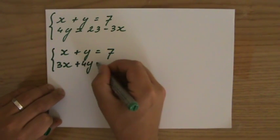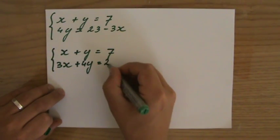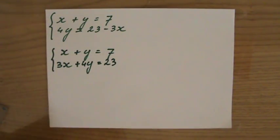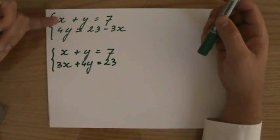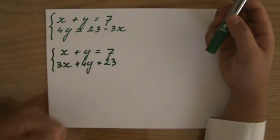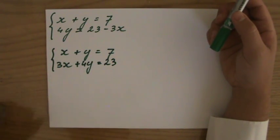Plus 4y is still there, and that equals 23 is still there. So before I could start working on this problem I had to make sure my x's, my y's, and my numbers are nicely aligned. They weren't, but now they are.